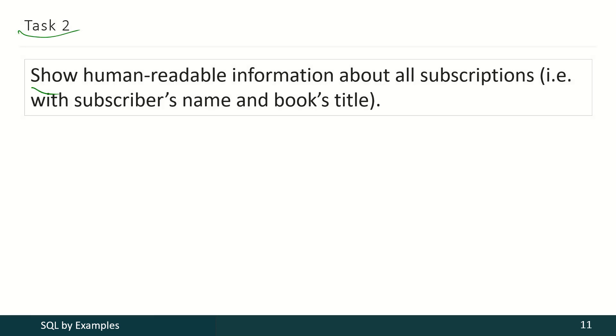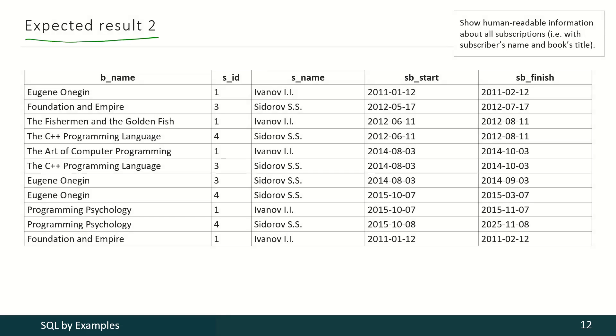In the next task, we have to show human-readable information about all subscriptions with subscribers' names and books' titles. This is how the expected result may look like. You may see books' titles here and subscribers' names here.